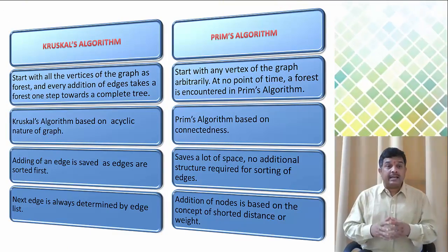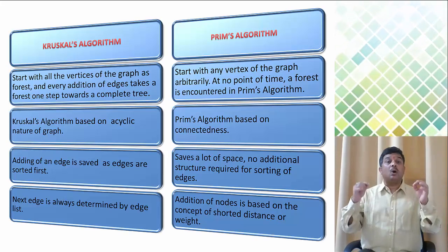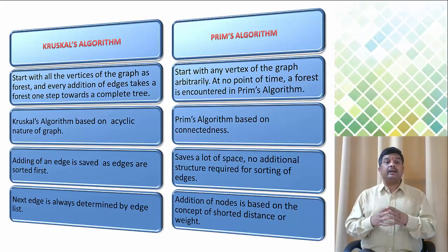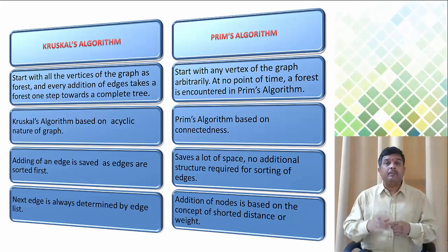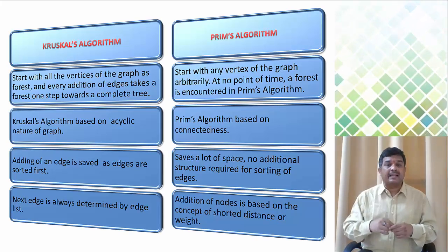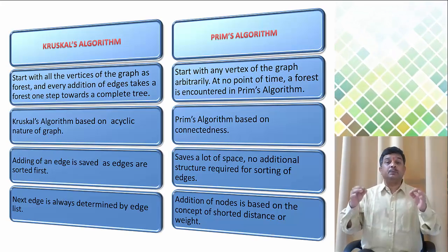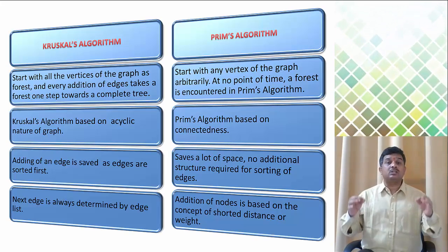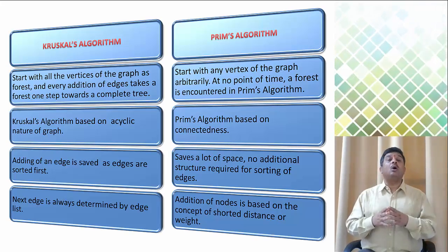The fourth difference: under Kruskal Algorithm the next edge is always determined by the edge list. But under Prim's Algorithm, addition of nodes is based on the concept of sorted distance or weight.